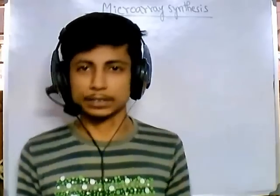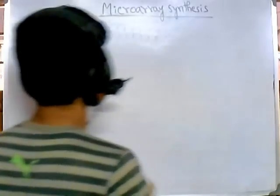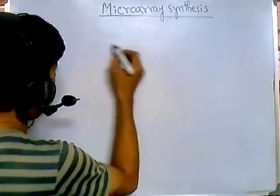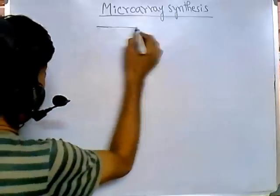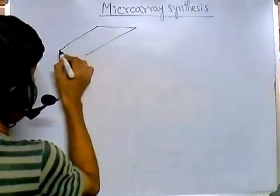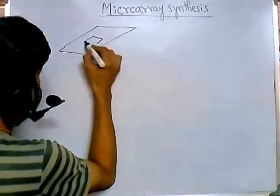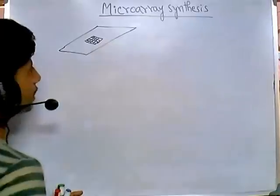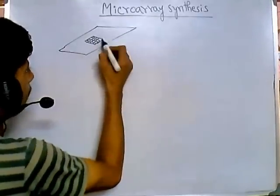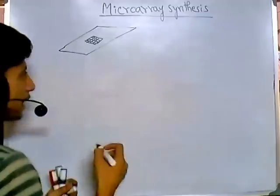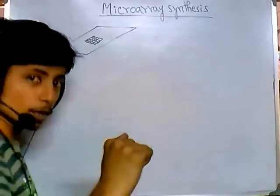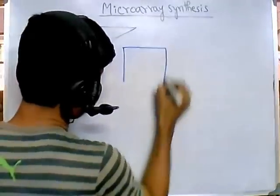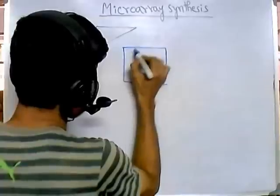For the microarray synthesis process, they use a simple slide. In the middle of that slide there is a small groove-like structure, divided into small group portions. If you zoom into each small square, that square actually consists of six more small squares.